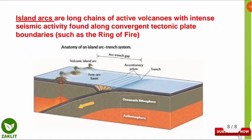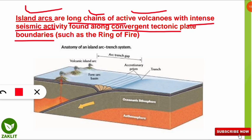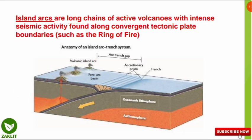Island arcs are long chains of active volcanoes with intense seismic activity, meaning they have high earthquake potential. They are found along convergent tectonic plate boundaries. A classic example is the Ring of Fire, where long chains of volcanoes are present at the boundaries of convergent tectonic plates. The question for viewers: which ocean is the Ring of Fire situated in?